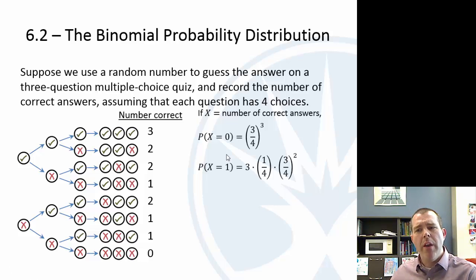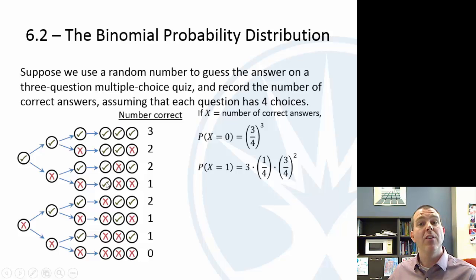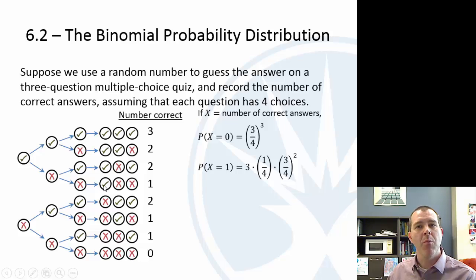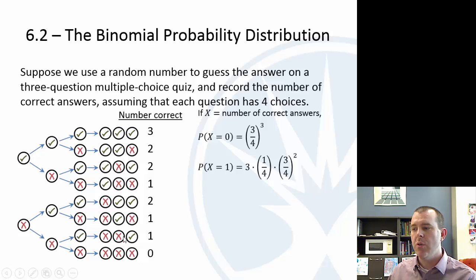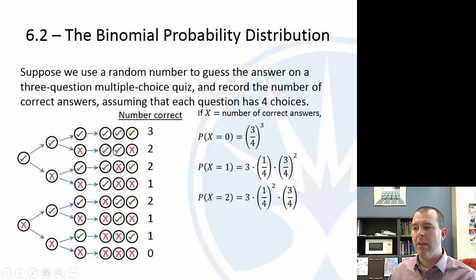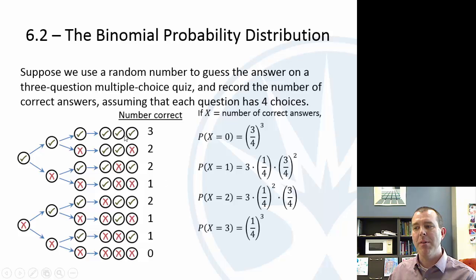The probability of getting exactly one right: the probability of the correct answer is 1/4, and each wrong answer is 3/4. There are 3 ways to get exactly one right (first, second, or third question), so the formula is 3 × (1/4) × (3/4)^2. For two right, it's 3 × (1/4)^2 × (3/4). For three right, there's only one way: (1/4)^3.